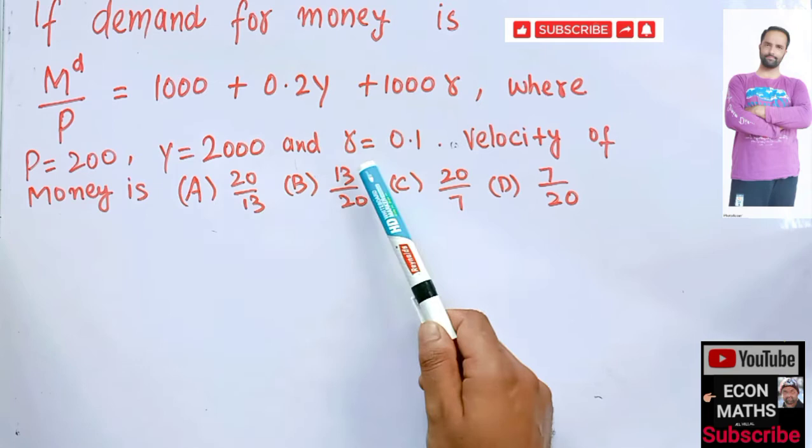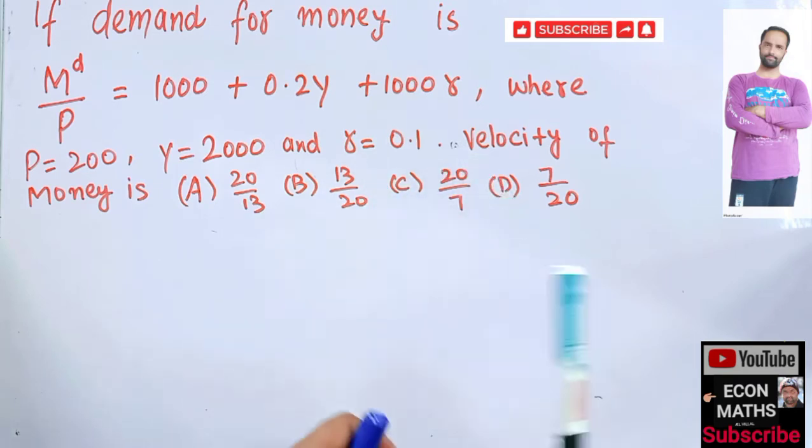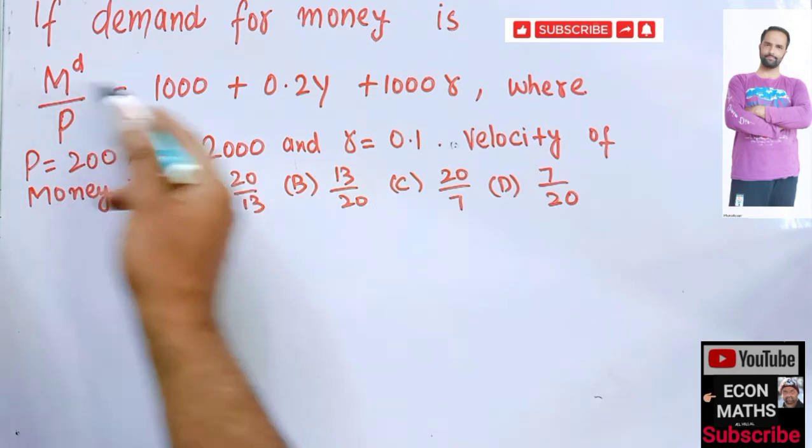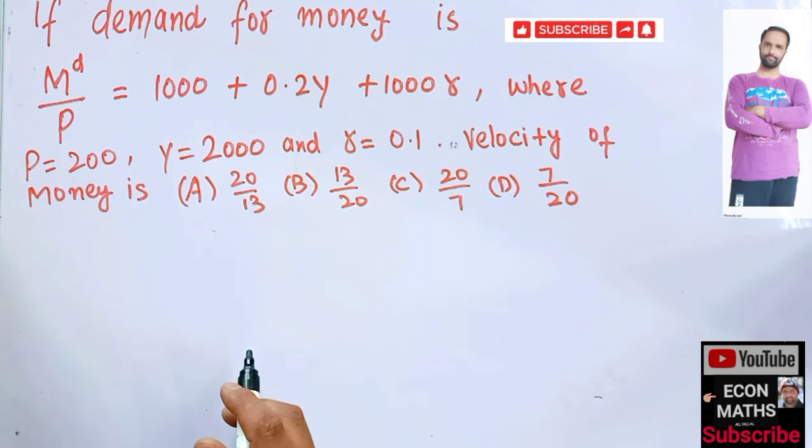The options are: 20/13, 13/20, 20/7, or 7/20. We need to know which of these options is correct. This is our demand for money. First of all we should know how to solve this.